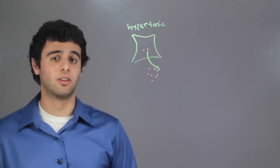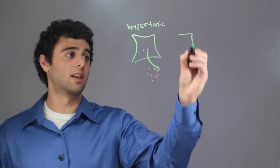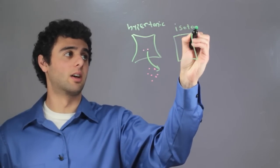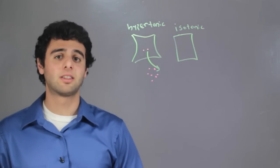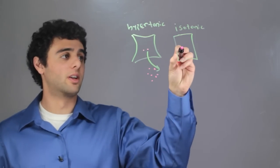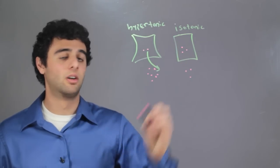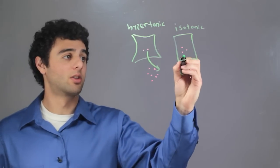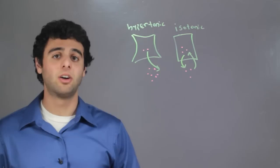The second type is an isotonic cell. In an isotonic cell, there is an even number of solute particles on the inside and the outside of the cell, so we have H2O going in and out of the cell maintaining a relatively even balance.